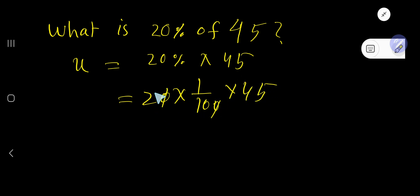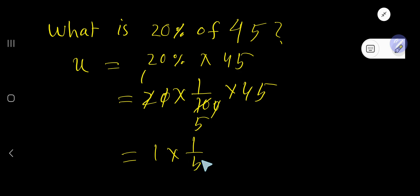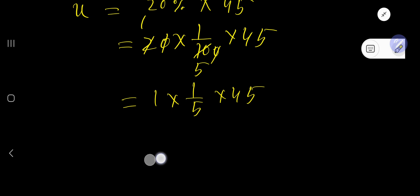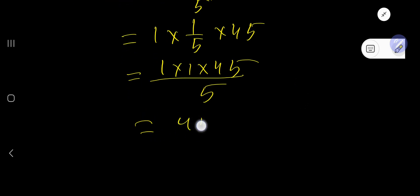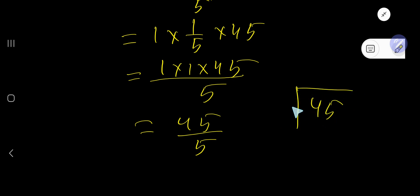Just cancel: this 0 and this 0. If you divide 2 by 2 you get 1, if you divide 10 by 2 you get 5. So it becomes 1 times 1 over 5 times 45. Multiply: 1 times 1 times 45 divided by 5, that is 45 over 5.